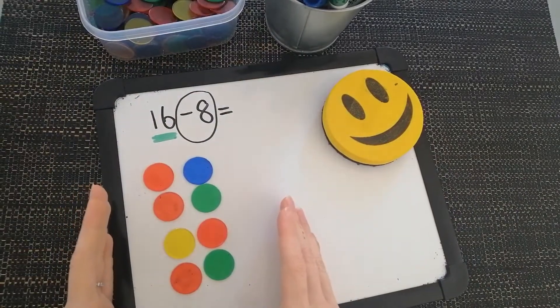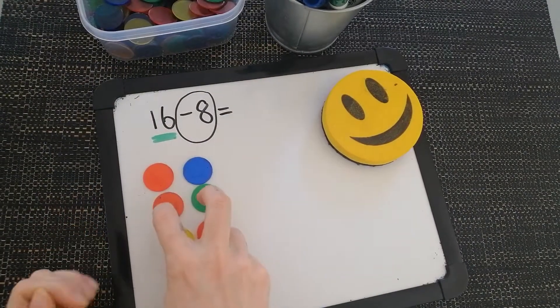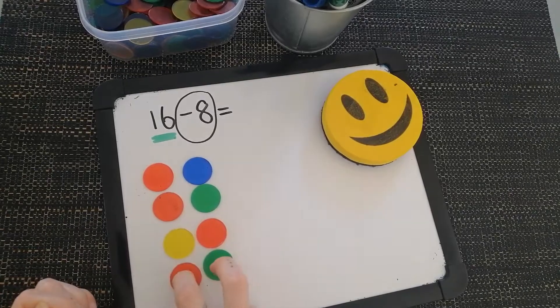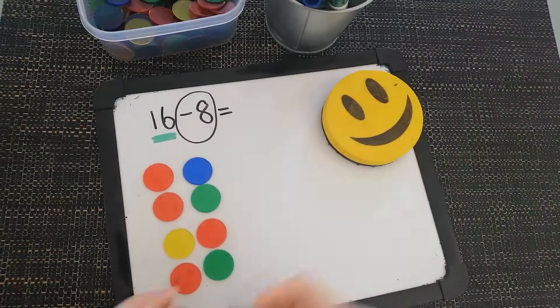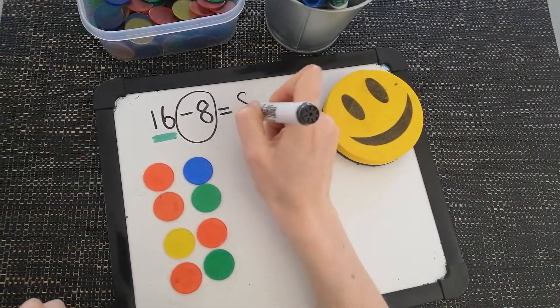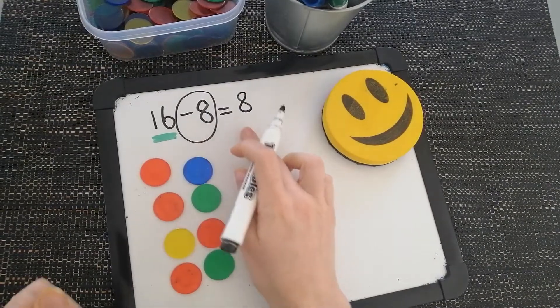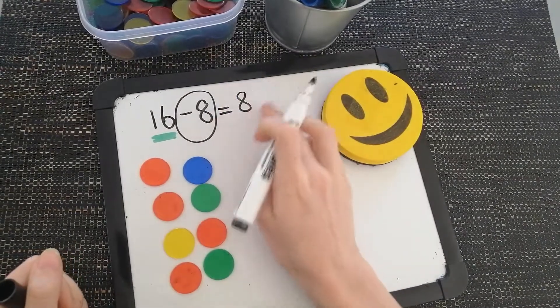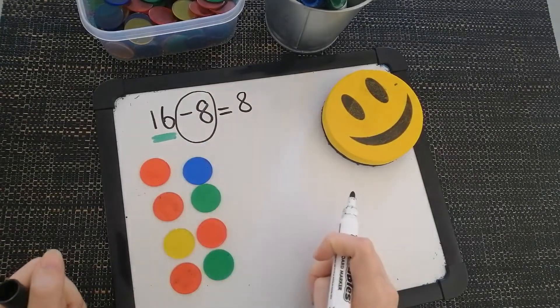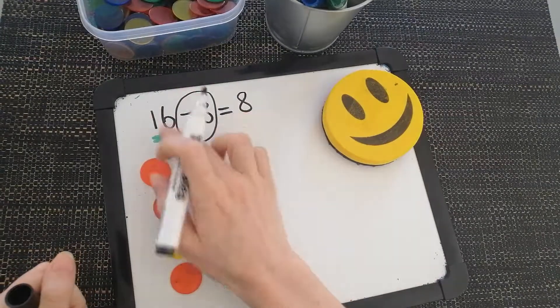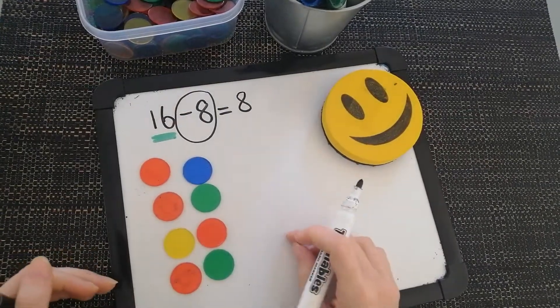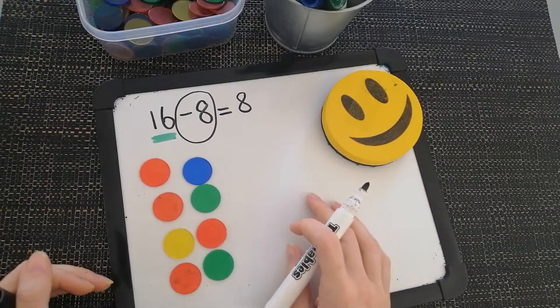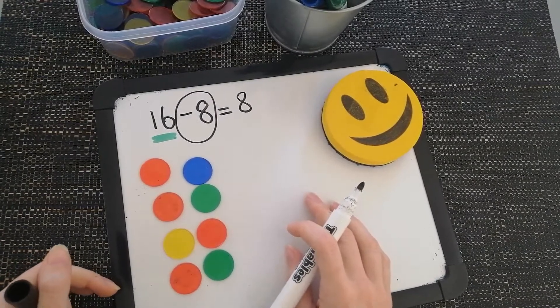How many do I have left? 2, 4, 6, 8. I have 8 counters left. So my answer of 16 take away 8 equals 8. This answer is smaller than the number I started with because I am subtracting. Smaller. Subtracting. See how you go, boys and girls.